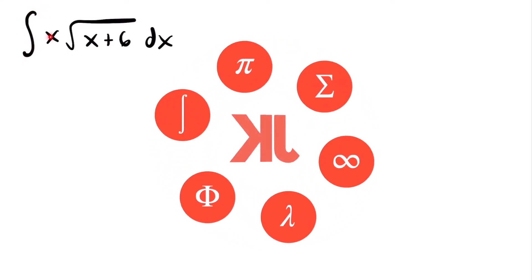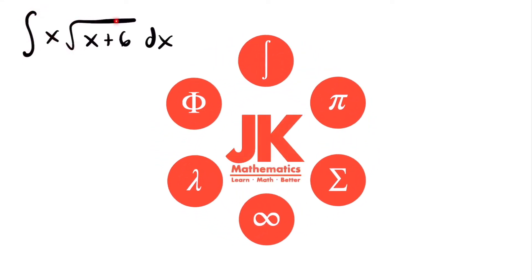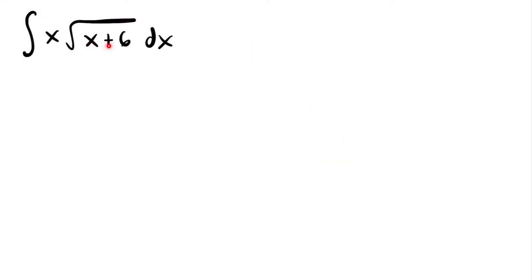Here we have the integral of x times the square root of x plus 6, times dx. In order to solve this integral, we are going to need to use u-substitution. Typically, we use u-substitution when we have a composite function within the integral. In this case, we have the square root of x plus 6.